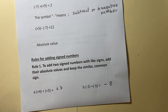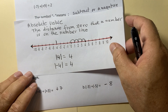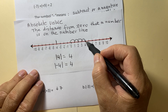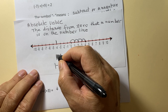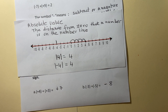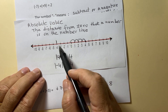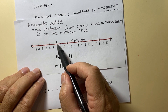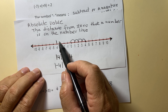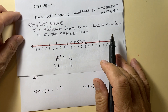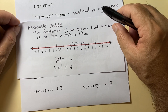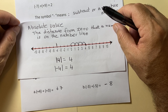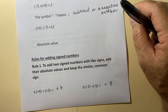Absolute value is the distance of a number from 0 on the number line. The absolute value of 4 is 4 — we use two vertical lines to show the absolute value. And the absolute value of negative 4 is again 4, or the distance from negative 4 to 0 is 4 units. These are two concepts we need to know before starting to apply the rules for adding and subtracting signed numbers.